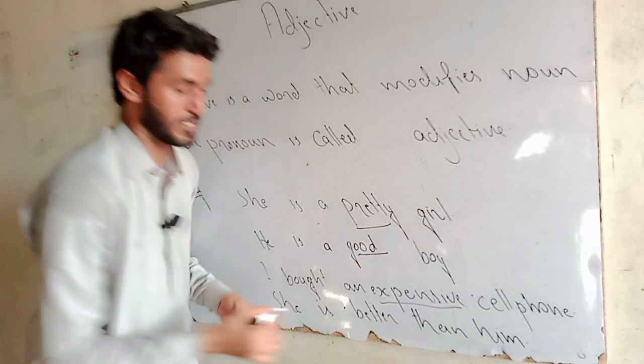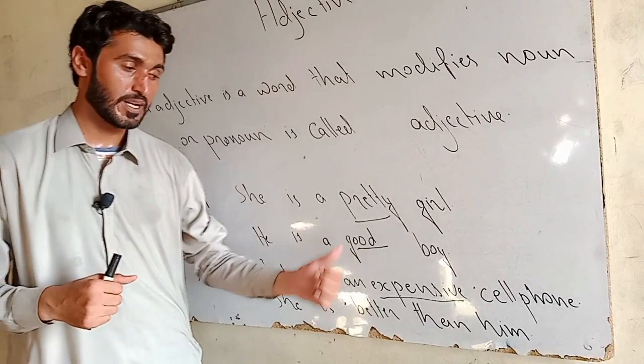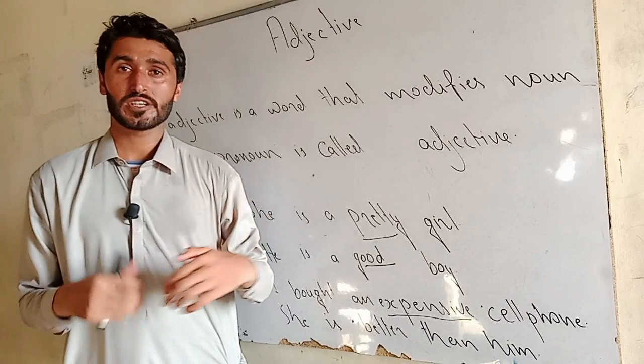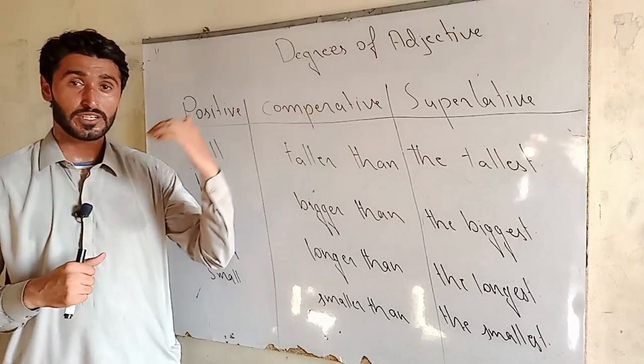In the third example: I bought an expensive cell phone. Here expensive is an adjective — it shows the quality of a cell phone. Here I have another example: she is better than him. Adjective modifies a pronoun and also it is comparing two students — how the students are. So here she is better than him means she is better.